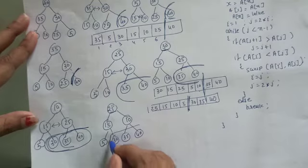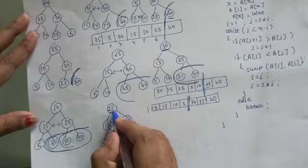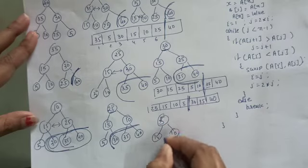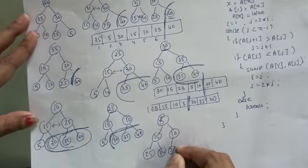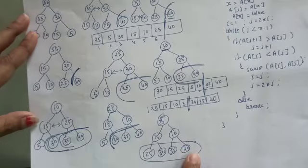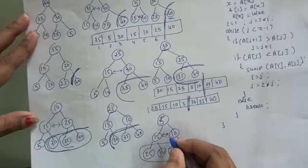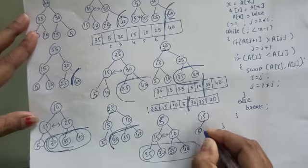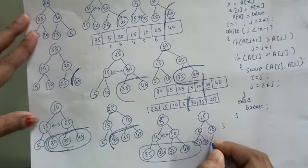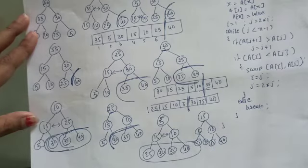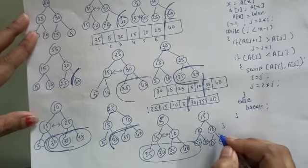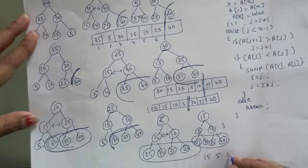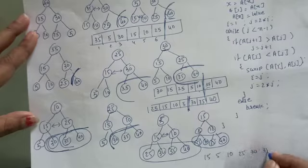Again delete is called: 25 takes the place of 5. After heapify, comparing 15 and 10 — 15 is greater, so 15 comes up and 5 goes down. 10 stays. The four deleted elements (25, 30, 35, 40) are not part of the heap. The corresponding array structure is: 15, 5, 10, 25, 30, 35, and 40.